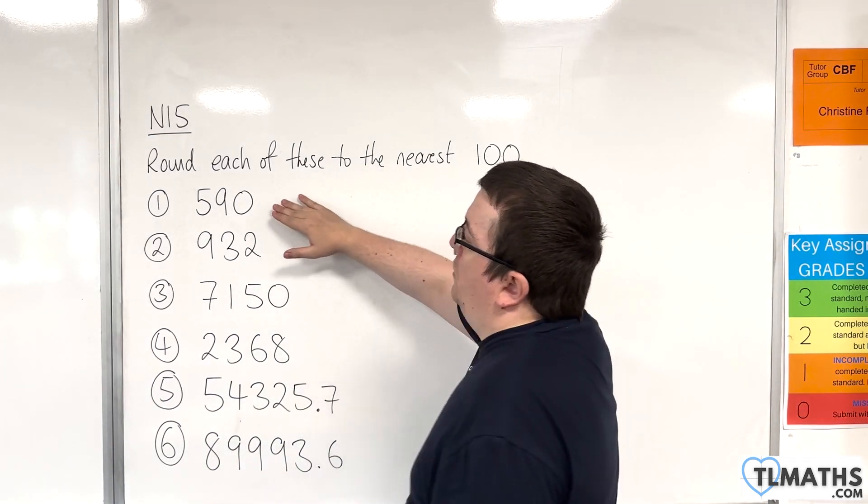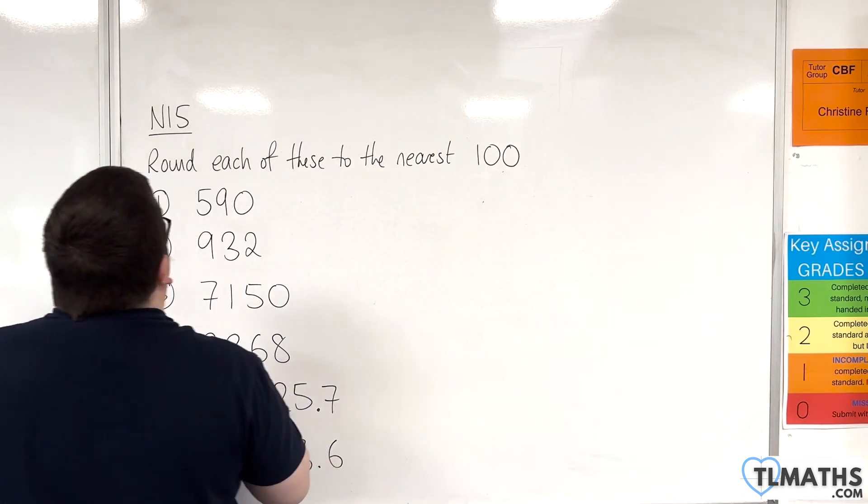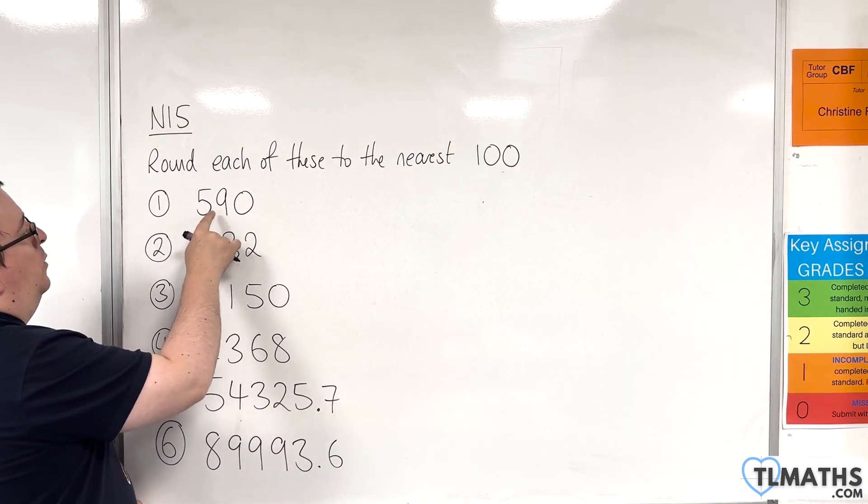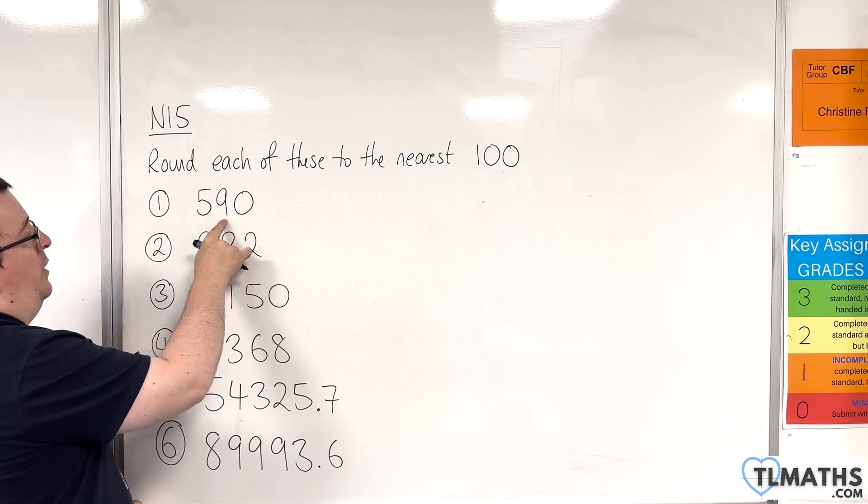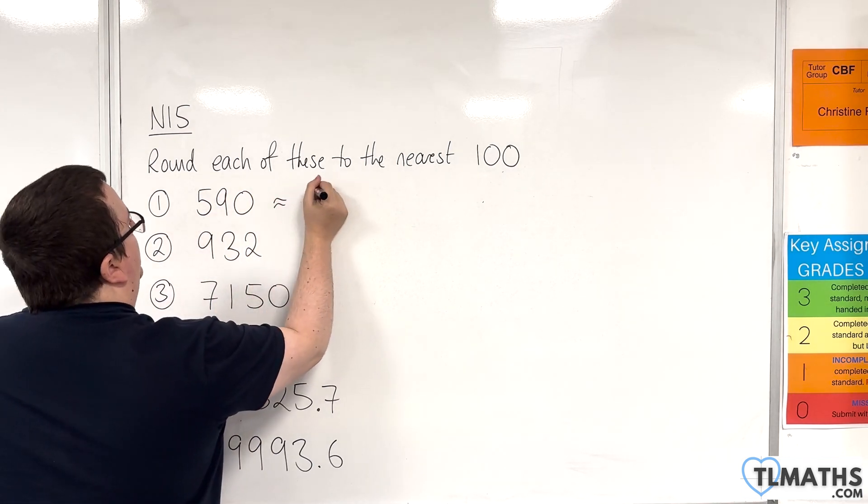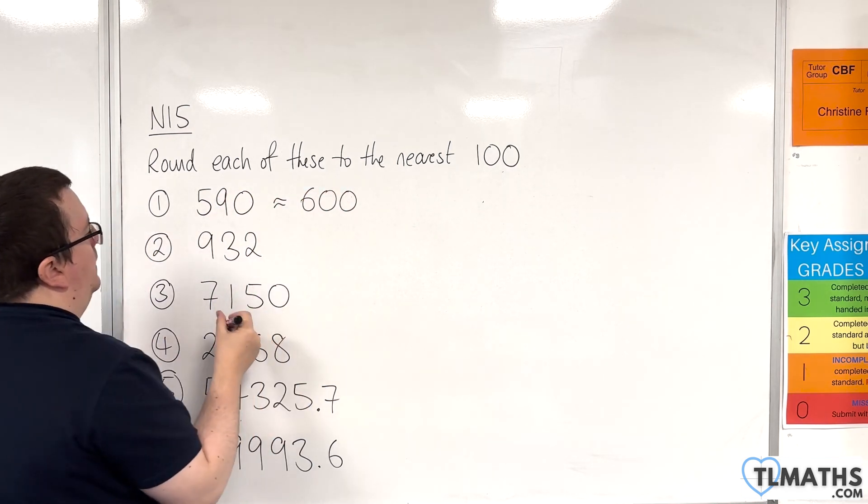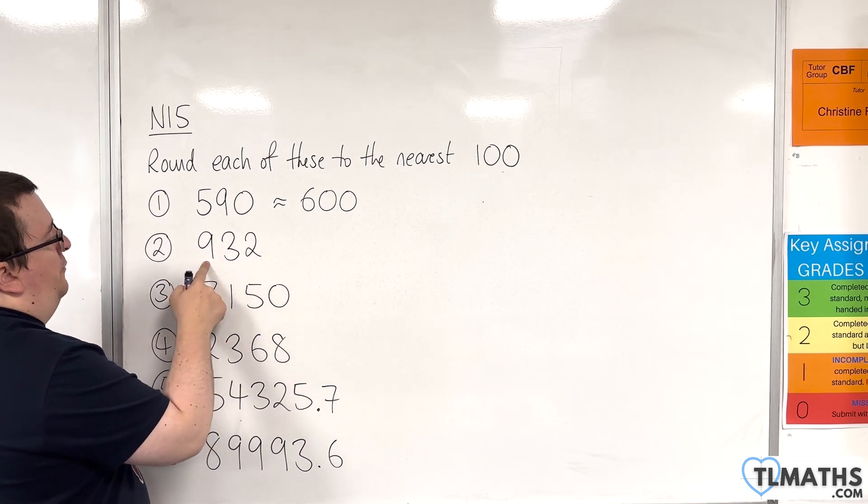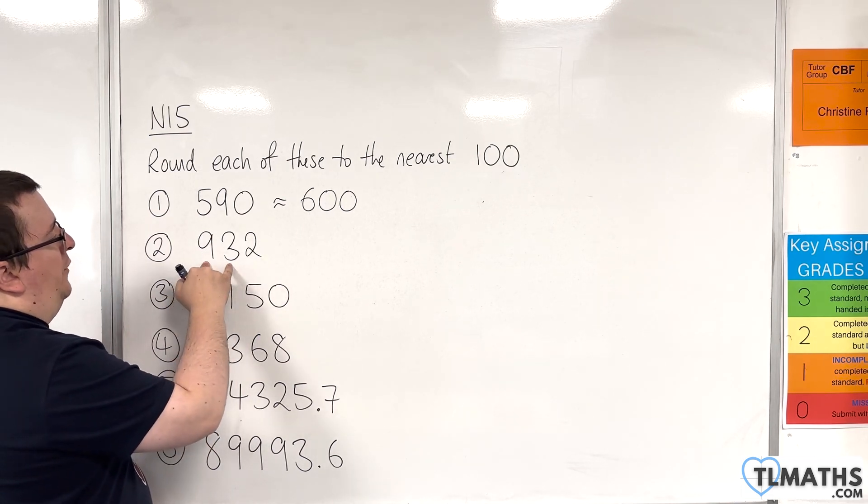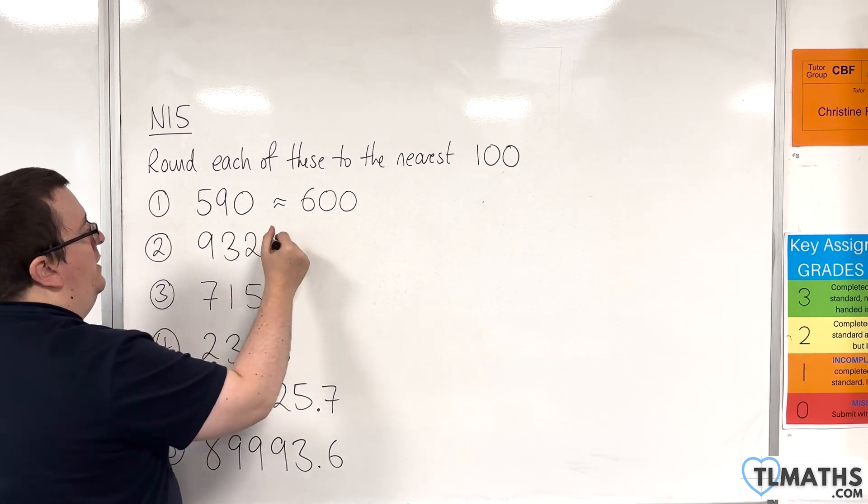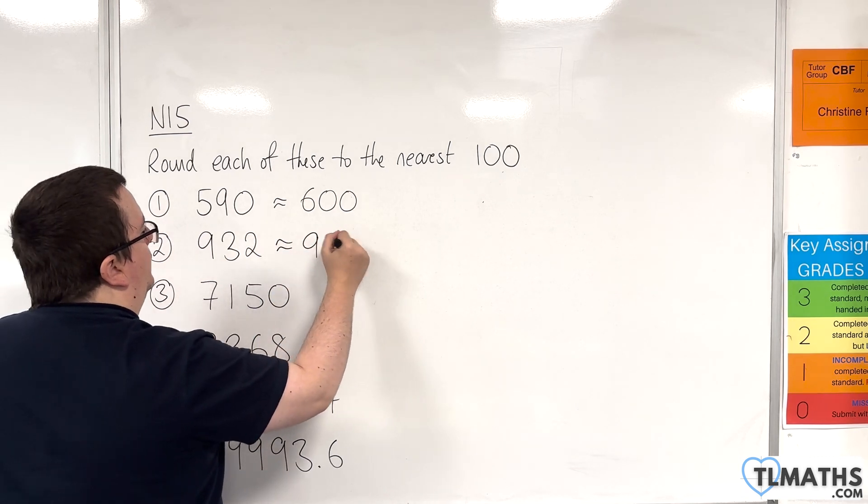Our first one is 590, so you find the hundreds column, one to the right, it's 5 or more, so we round this up, so this would be 600. 932, find the hundreds column, one to the right is less than 5, so we round it down to 900.